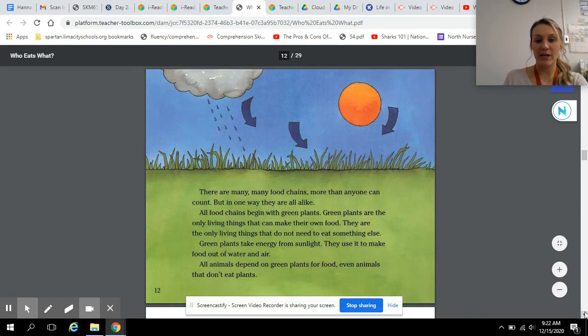But in one way, they are all alike. All food chains begin with green plants. Green plants are the only living things that can make their own food. They are the only living things that do not need to eat something else. Green plants take energy from sunlight. They use it to make food out of water and air.